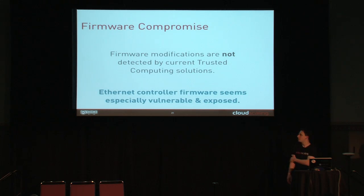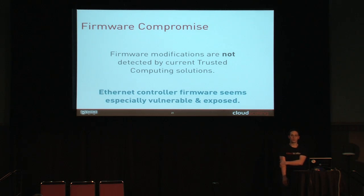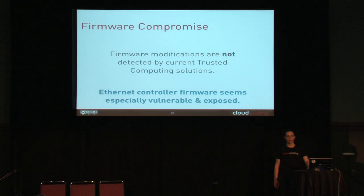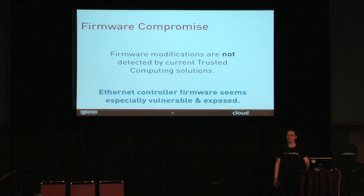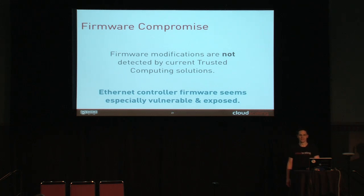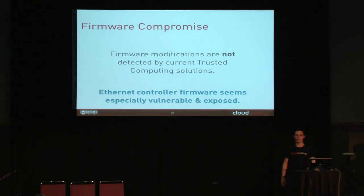Firmware compromise is something we can actually do a little bit more about, but it's still pretty bad. Ethernet controllers in particular are kind of vulnerable. In January there was an Intel EPROM failure where you could actually kill network controller firmware over the network by sending it a magic packet. It practically affected most of the Intel controllers out there today. And that's only one step away from an overflow that would have actually allowed you to overwrite the firmware over the network — and then all your TXT and all of your secure boot stuff in TPM is useless.